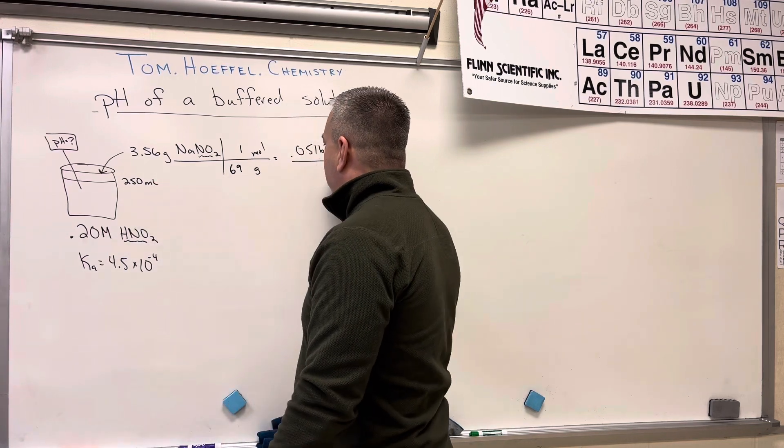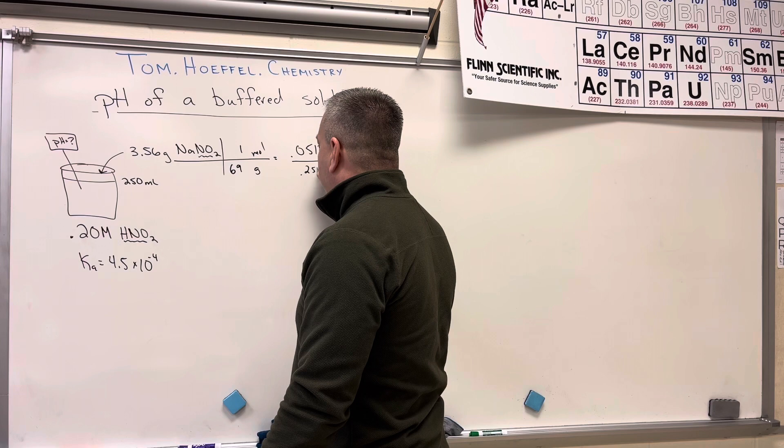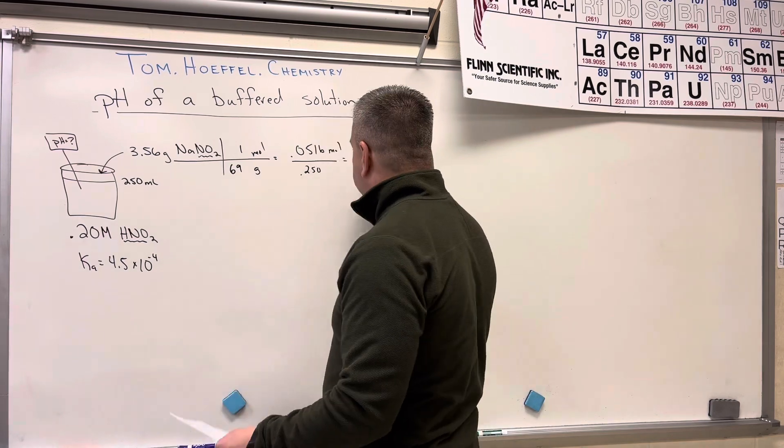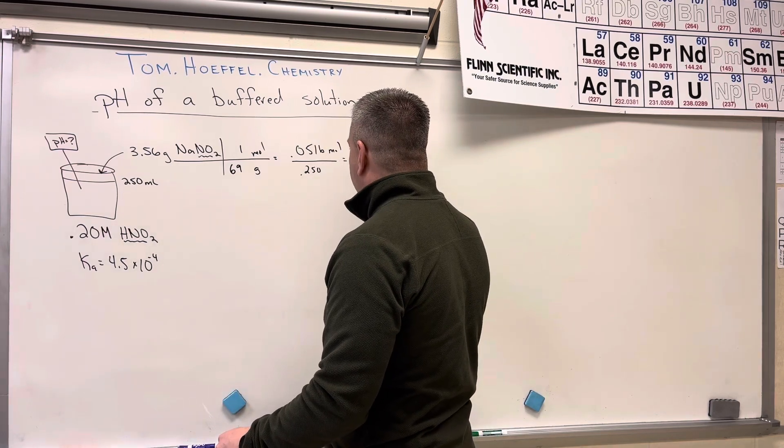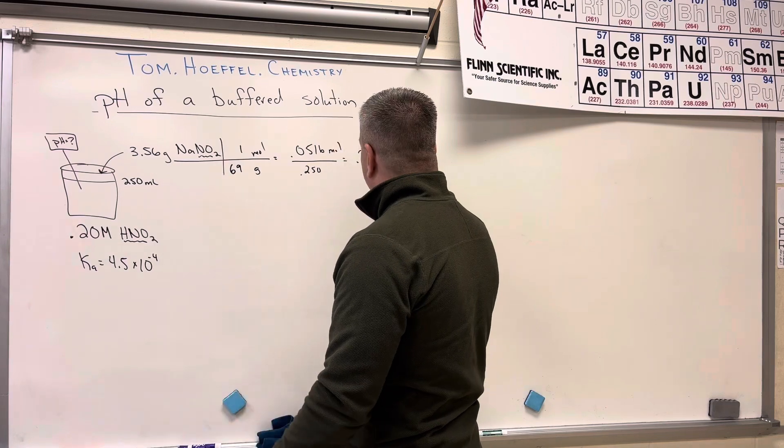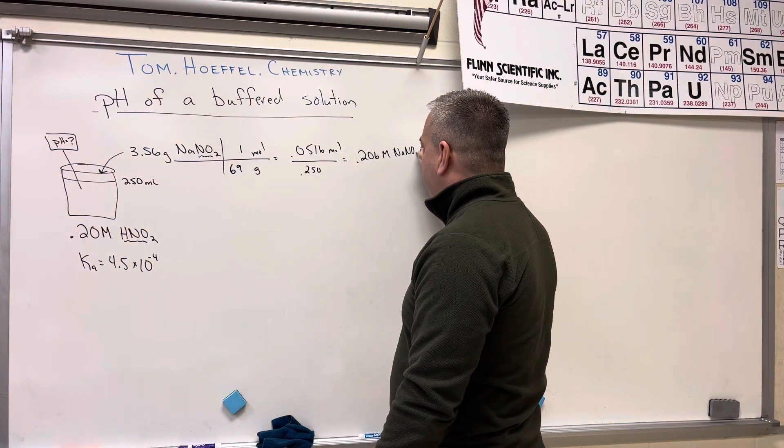divided by the volume of 0.250 will give me the molarity. And the molarity comes out to be 0.206 molar sodium nitrite.